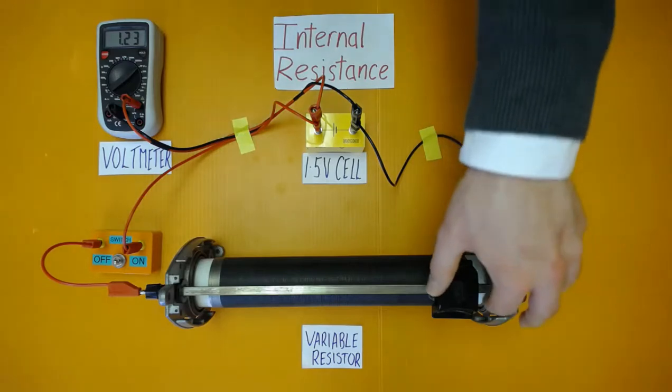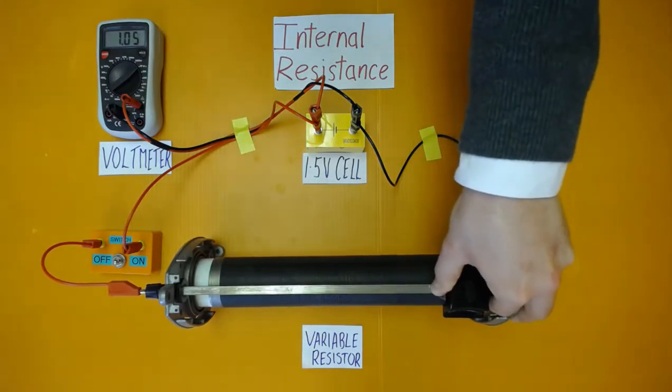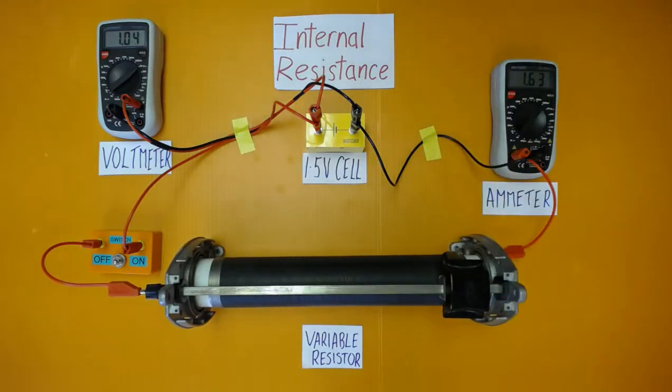Decreasing again, we have a current of 1.62 amps and a terminal potential difference of 1.03 volts.